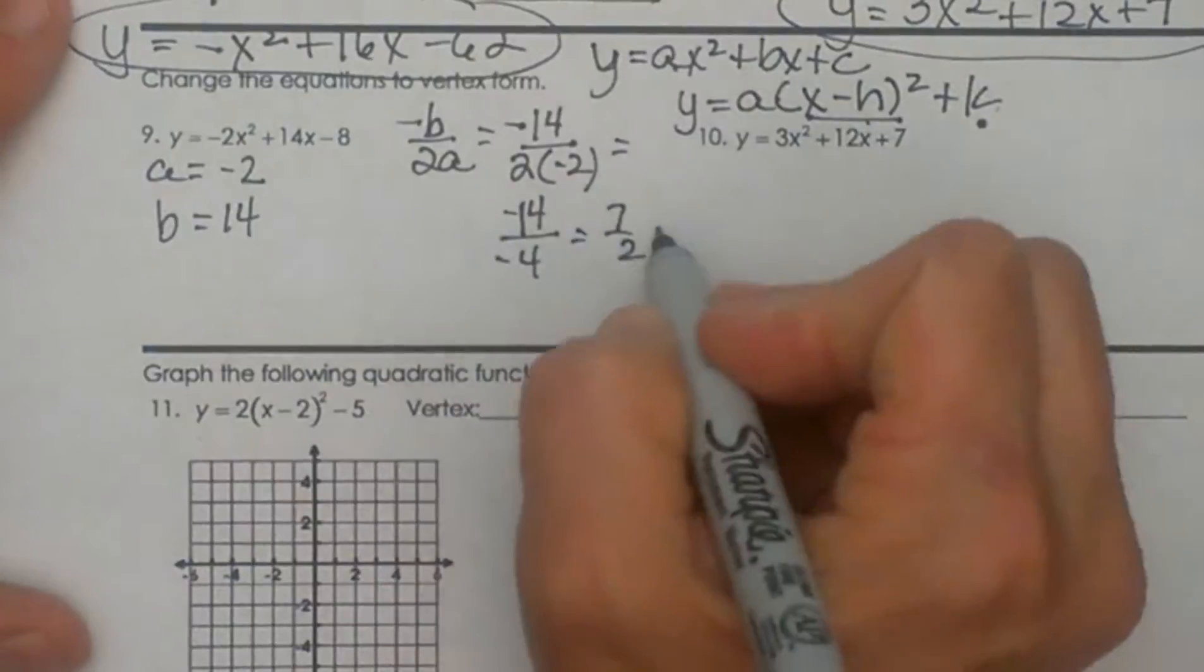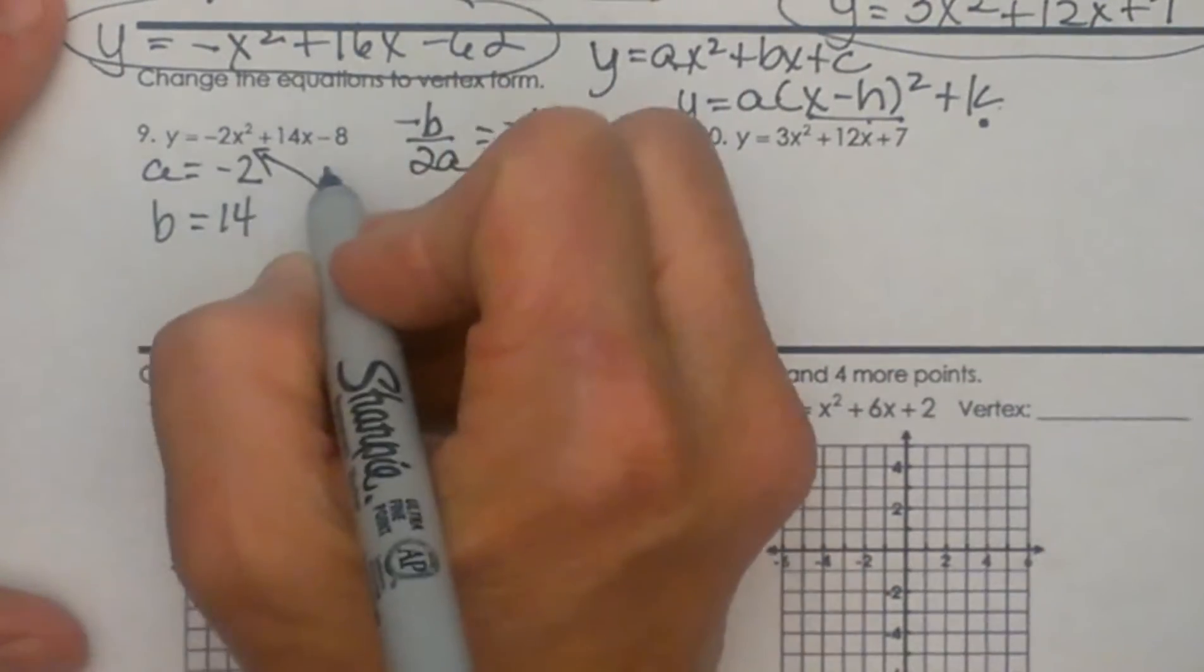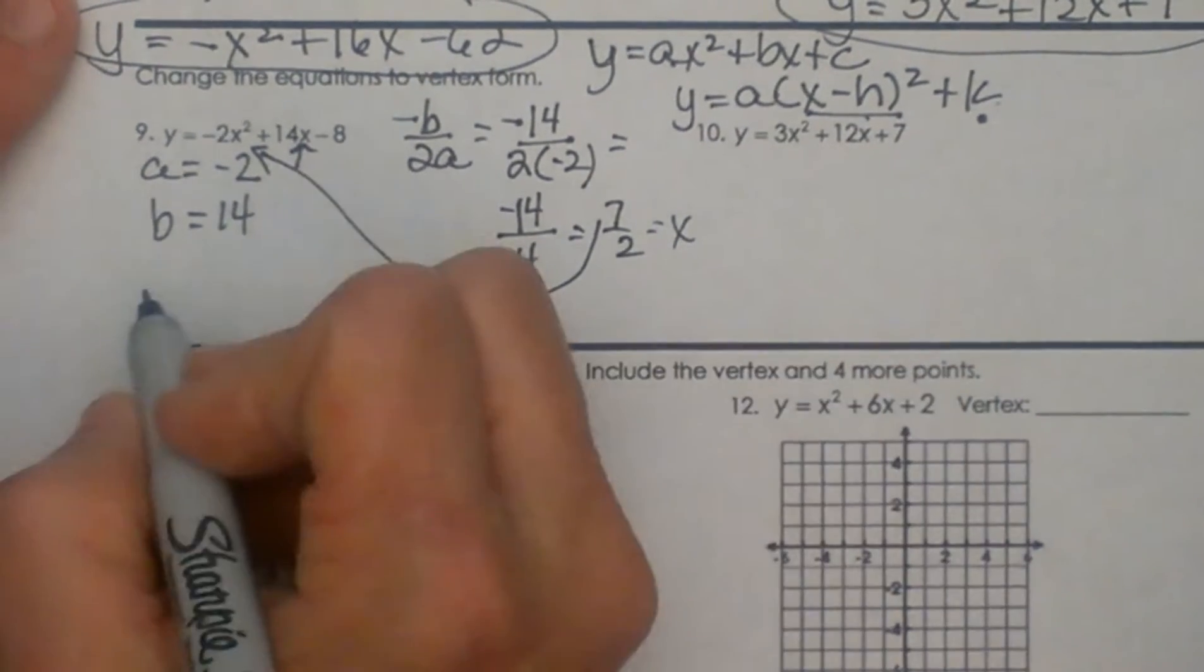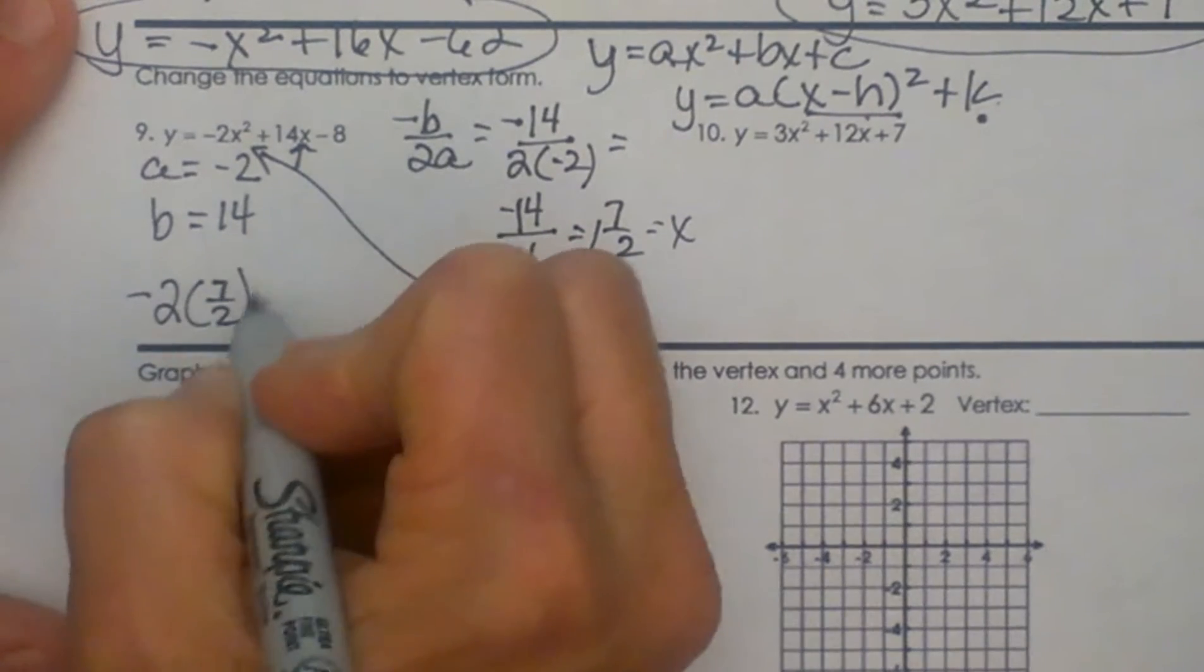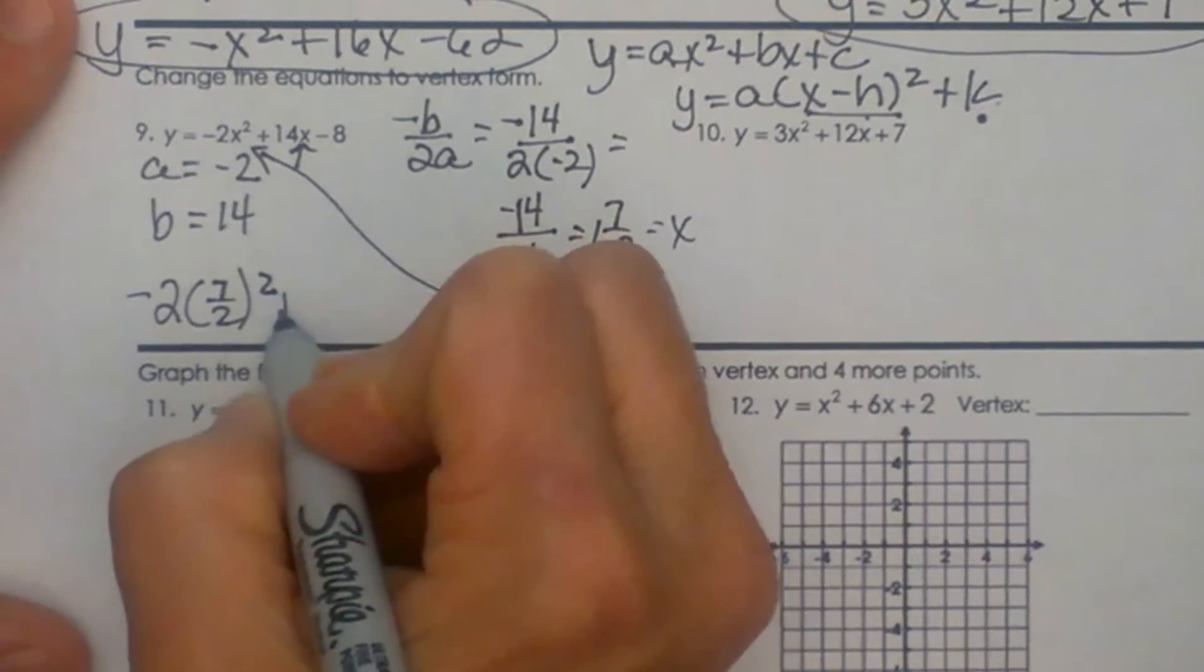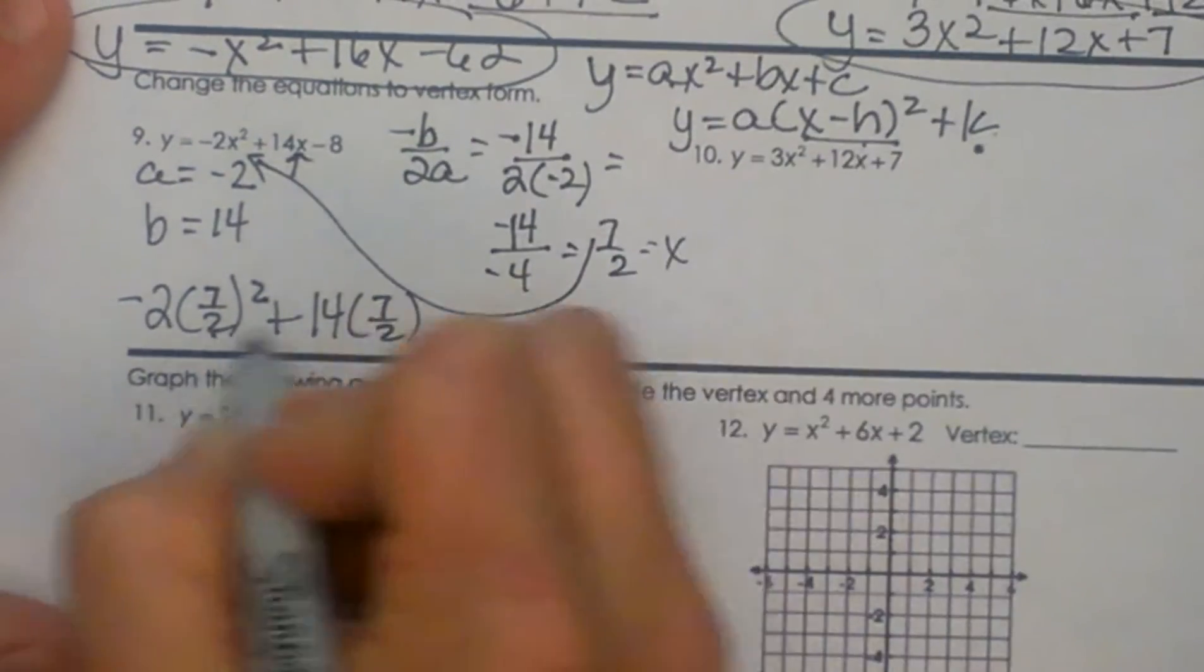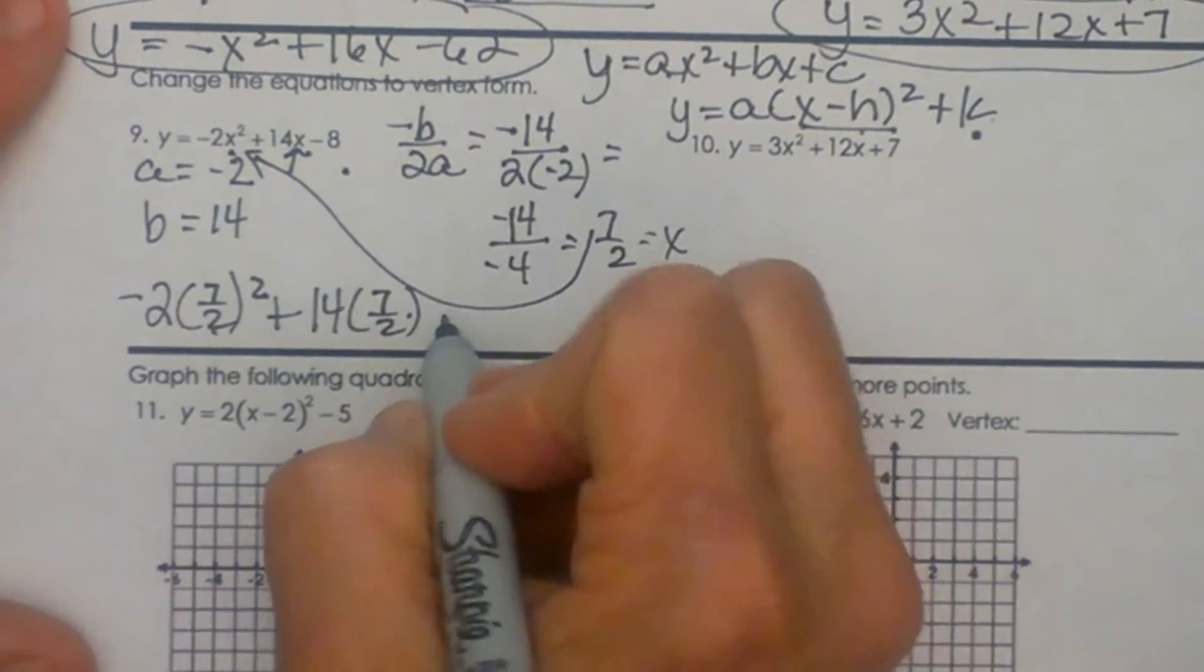So now I am going to take this x coordinate and I am going to plug it back into the original function and that is going to give me my y coordinate. So let's see if we can handle our fractions. Negative 2 times 7 halves all squared plus 14 times 7 halves, and notice I have plugged in 7 halves twice in for both x's, and then minus 8.